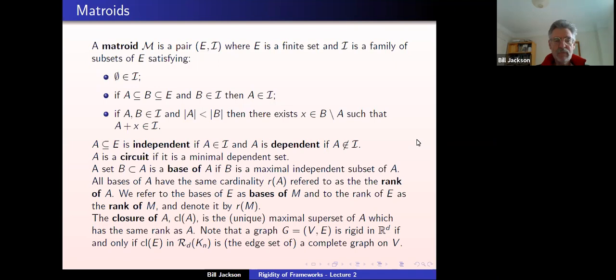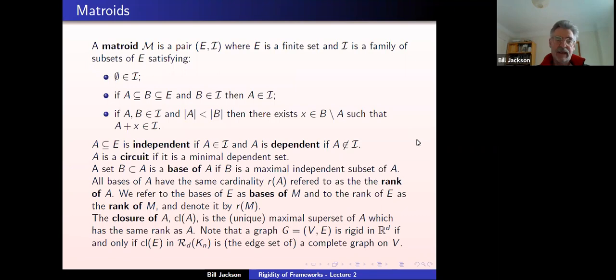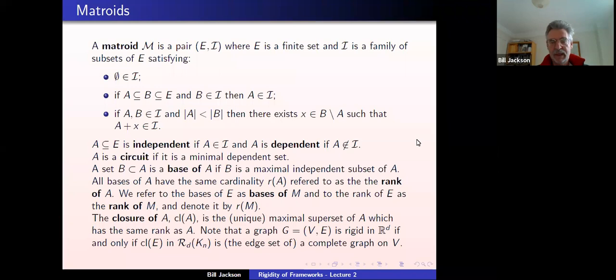To give an example: if we have a graph G which is generically rigid in d-dimensional Euclidean space, and we consider the d-dimensional generic rigidity matroid on a large complete graph, and then take the closure of the edge set of G, we will get a complete graph on the vertex set of G. If a graph is rigid, it has maximum possible rank, so all edges not belonging to G, when we add them joining two vertices of G, won't increase the rank. So we can add all such edges without increasing the rank, giving us the complete graph as the closure.